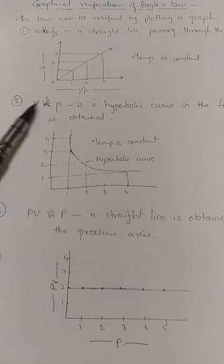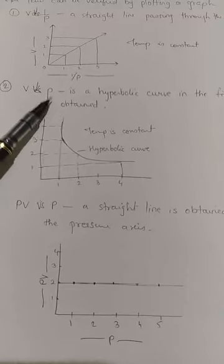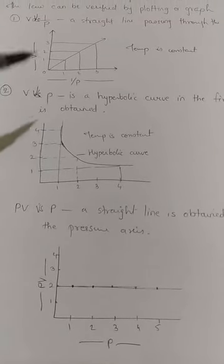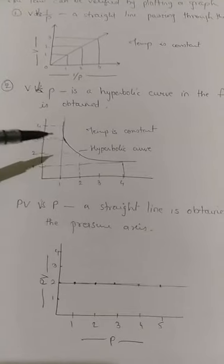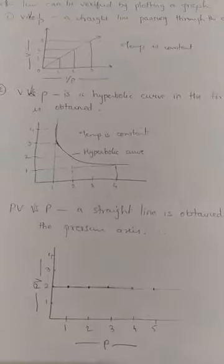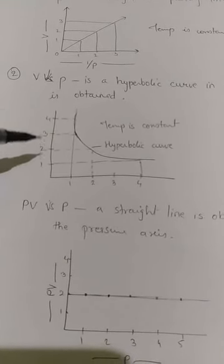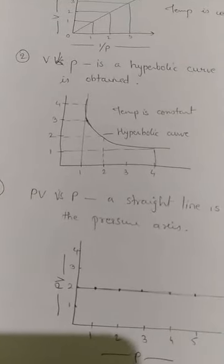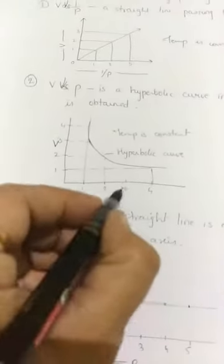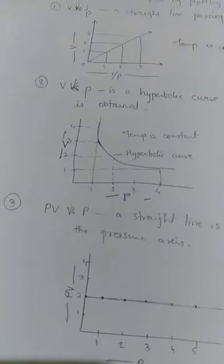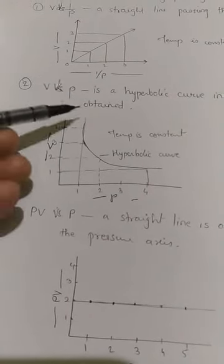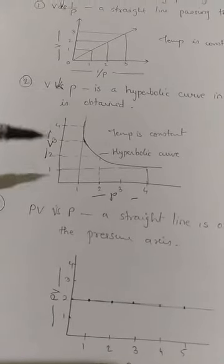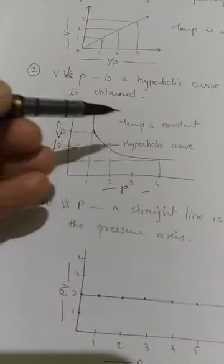In the second graph, volume versus pressure is plotted. Here, a hyperbolic curve in the first quadrant is obtained. As you know, graphs have four quadrants — first, second, third, and fourth. On one axis we take values 1, 2, 3, 4 and on the other axis similarly. Volume and pressure are shown on these axes. When volume and pressure are directly plotted against each other, it gives a hyperbolic curve. Temperature remains constant here as well.